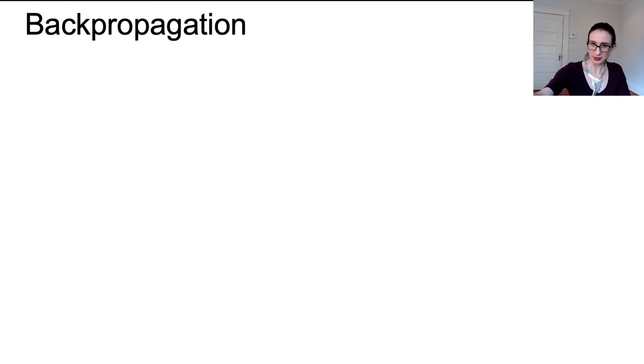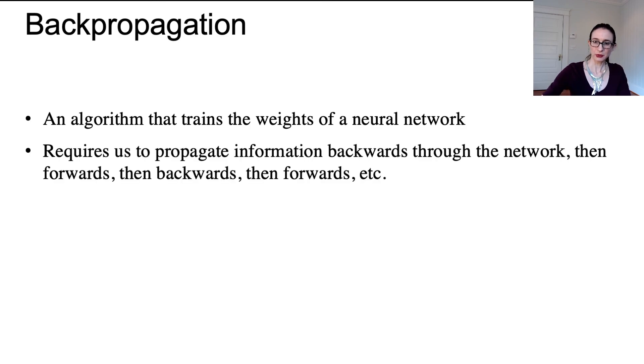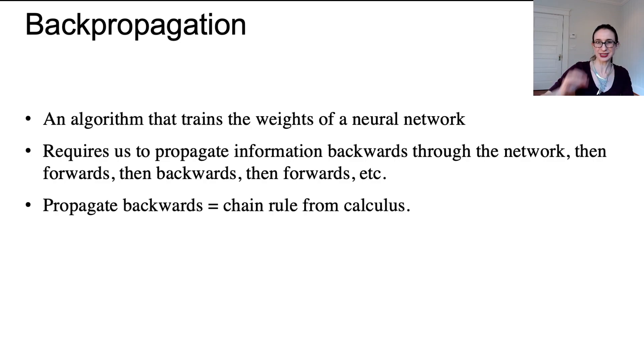Let's talk about backpropagation which is the way that we essentially do gradient descent on that error. Backprop is an algorithm that trains the weights of a neural network. It requires us to propagate information backwards through the network and then forwards and then backwards and then forwards. We're propagating gradients backward and then making predictions as we go forward. Now propagating backward is exactly equal to the chain rule from calculus and I'm going to show you how that works in the next video. Thanks.